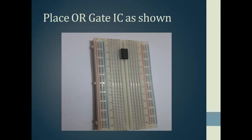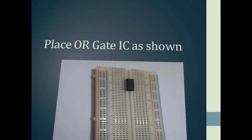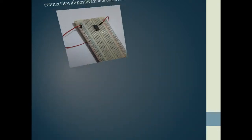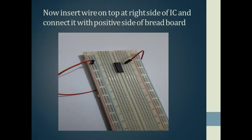Starting the construction: first we will make the OR gate, then after all the wires and connections are done we will make the NOR gate. We begin by placing the OR gate IC on the breadboard, inserting a wire on the top right side of the IC and connecting it with the positive side of the breadboard.